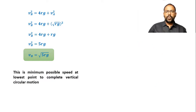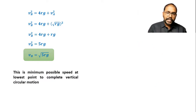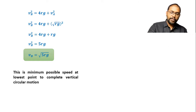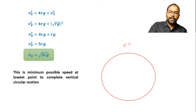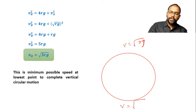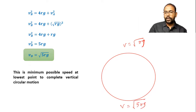So to summarize: minimum speed at the highest point is √(rg), and minimum speed at the lowest point is √(5rg). Remember these two results.